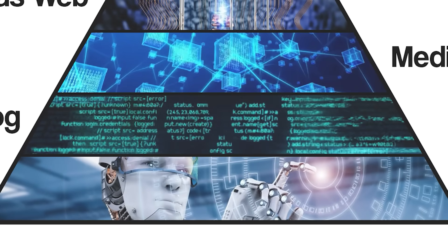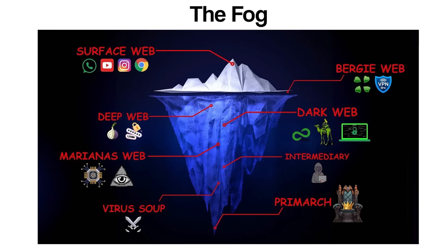The Fog, also known as virus soup, is a term rooted in Internet folklore, referring to an alleged layer of the Internet where chaotic, unregulated, and often malicious digital activity occurs. While not recognized by mainstream computer science, the concept of the Fog serves as a metaphor for the murky, unstable, and potentially dangerous digital undercurrent that supports the broad structure of the Internet.